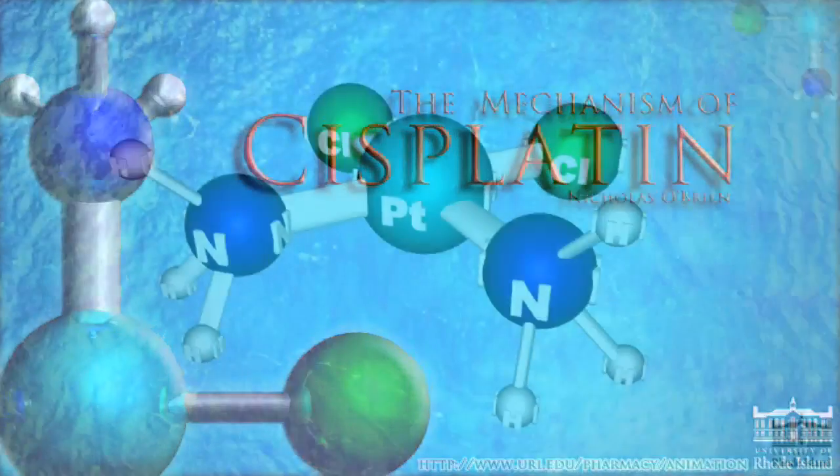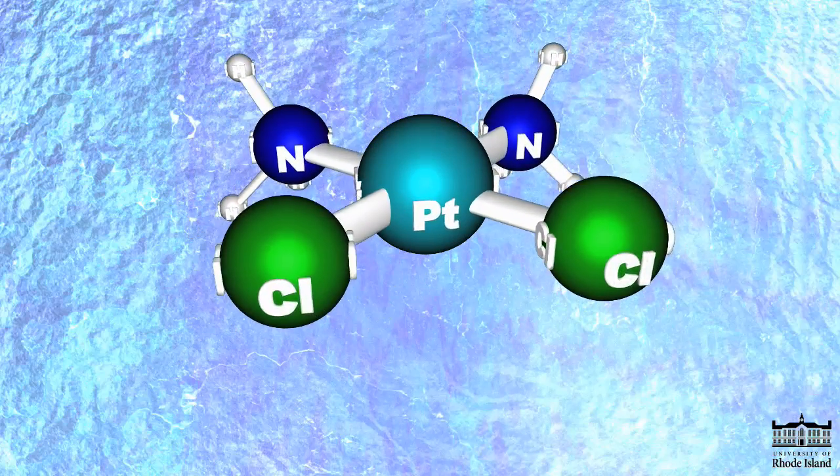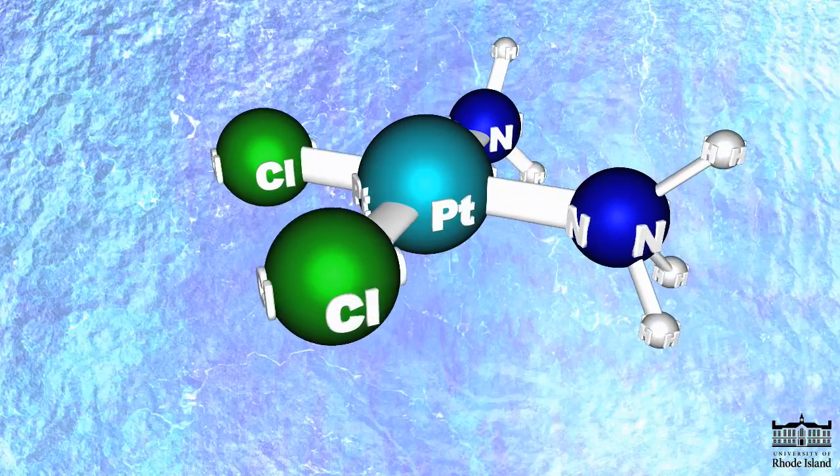Cisplatin is in a class of drugs known as platinum-containing compounds used to treat various types of cancers including metastatic testicular and ovarian tumors.